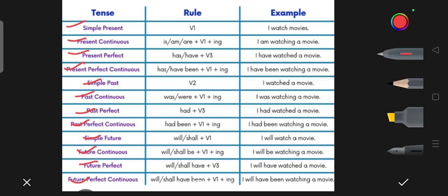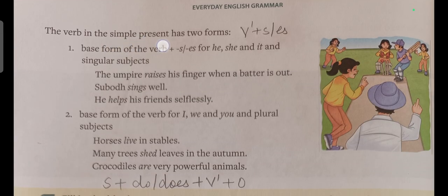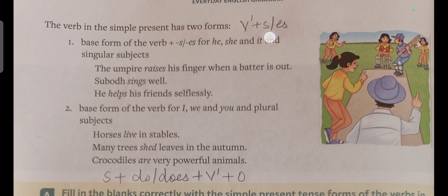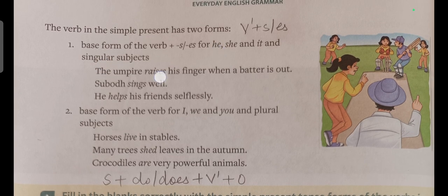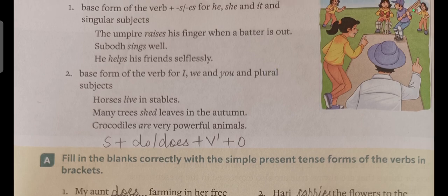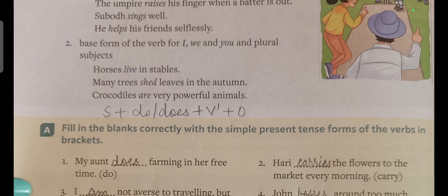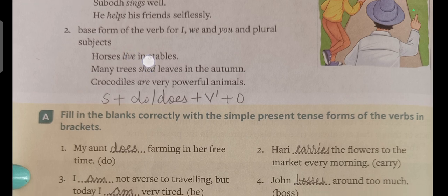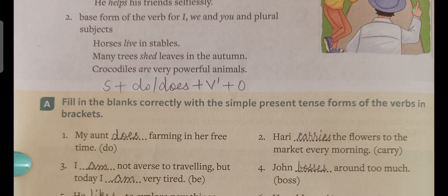You have to write this in your notebook and learn the form well, because examples are formed from these formulas. In Simple Present, remember V1 is used with 's' or 'es' for singular subjects — he, she, it — for example 'rises' or 'helps'. But for plural subjects — I, we, you, they — only the base verb V1 is applied, without 's' or 'es'. For example, 'Horses live in stables.' With 'crocodiles', the helping verb 'are' is used.